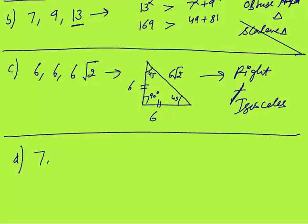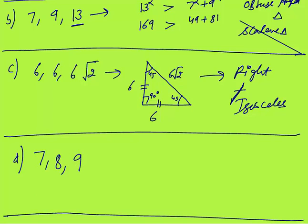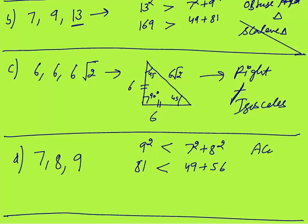Part D: sides are 7, 8, and 9. It is not a right angle triangle. 9 squared is 81, and 7 squared plus 8 squared is 49 plus 56 = 105. Since the square of the largest side, 81, is less than the sum of squares of the other two sides, 105, this is an acute angle triangle. And since all sides are different, it is also a scalene triangle.